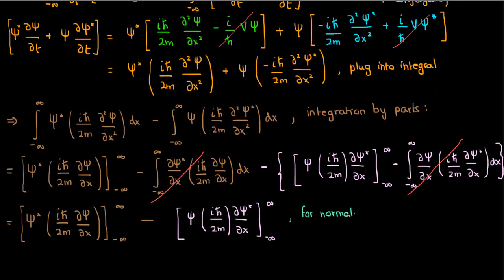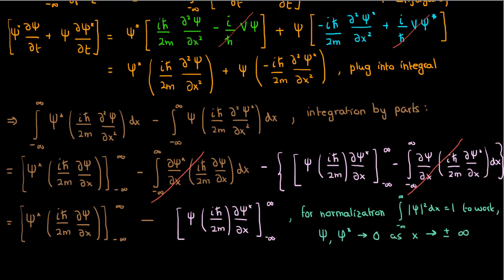If we use integration by parts, we'll find that the integral terms cancel and we're just left with the boundary terms. Now, because the normalization condition has to be obeyed, the integrals of the norm squared of psi have to be finite. In order for the integrals to be finite, we need psi and psi star to approach zero as we go to negative infinity and infinity. If they didn't approach zero, the integrals would not be finite and the normalization condition would not be obeyed. As a result, both boundary terms are zero.